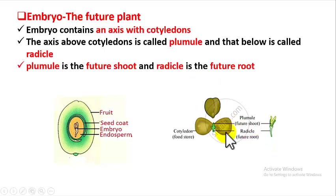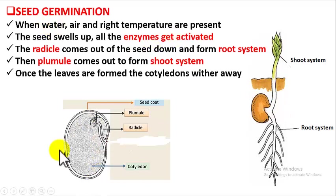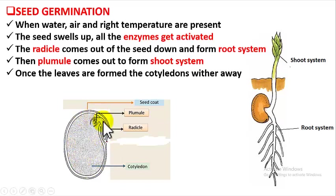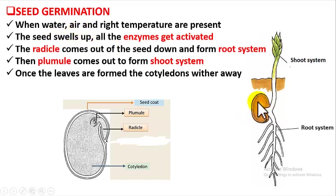Now let us see how seed germination produces the baby plant. Inside the seed we find an embryo with plumule and radicle, and a big region called cotyledon — this was endosperm before. The cotyledons feed the embryo until it becomes a small baby plant. When seeds are sown in soil under favorable conditions — water and right temperature — the seed absorbs water and swells up. When water is plentifully available, the enzymes present in the seeds get activated. Enzymes are biocatalysts that speed up biochemical reactions.